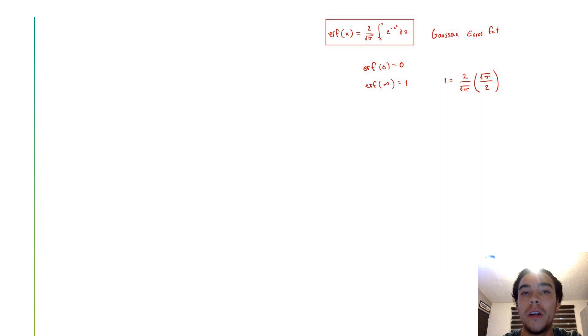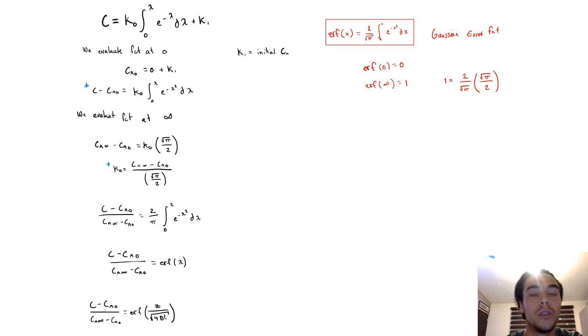We can introduce the Gaussian error function, which looks very similar to our general equation. When evaluated at zero, it equals zero. And when evaluated at infinity, it equals one. And that one equals two over square root of π multiplied by square root of π over two.